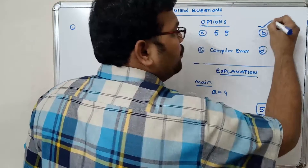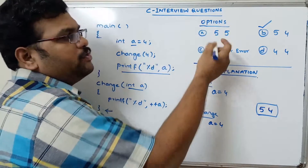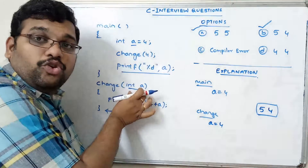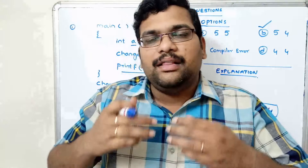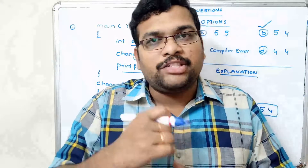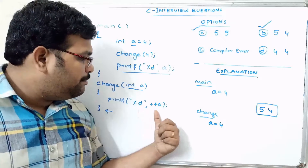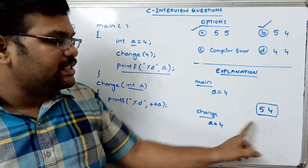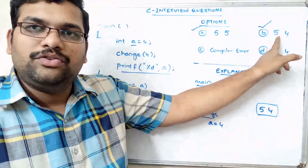Most people get confused and go for option '5 and 5', but these are local variables with scope within their respective blocks. The parameter passing technique is call by value, where changes to formal parameters do not affect actual parameters. In main, we are printing the actual parameter, so the a value in main remains 4. The output is 5 (from the change function) and 4 (from main).